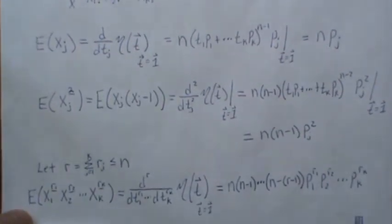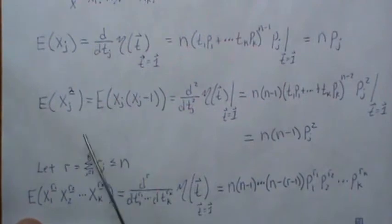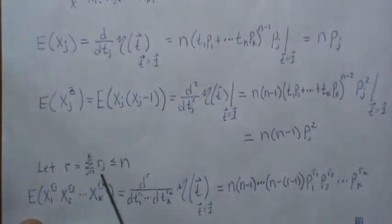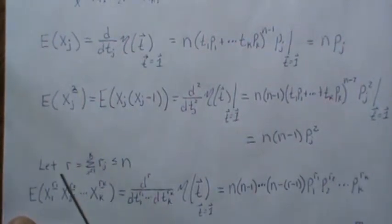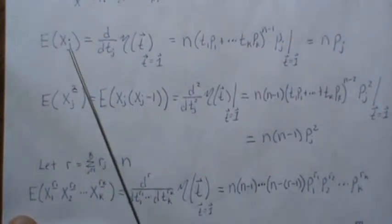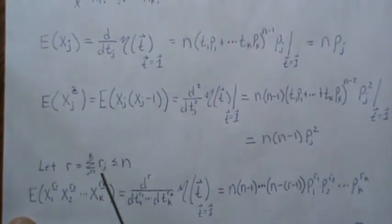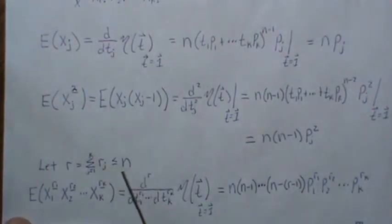But now in general, if we let r be the sum of these rajs, which are less than or equal to n—so in this case r was 2, in this case r was 1—so it doesn't have to equal n. It could be anything. So these are all falling factorials of the respective x's.